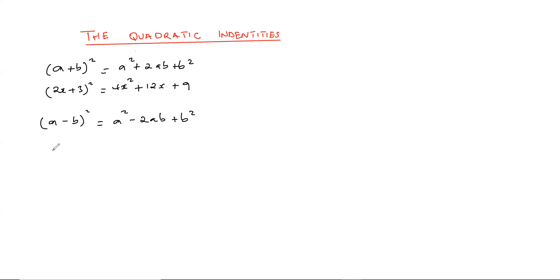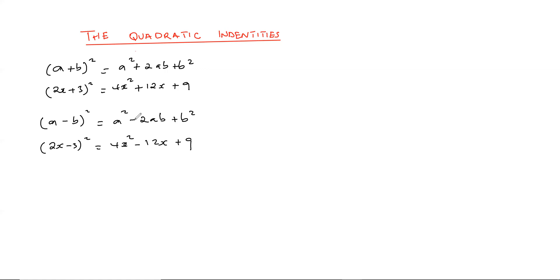An example: if it was (2x minus 3) squared, this gives you 4x squared minus 12x plus 9. The only difference is the sign, because 2x times negative 3 times 2 gives you negative 12. This is the second identity. When you have a factorized expression, it can be written in expanded form, and if you have it expanded, you can change it to factorized form — same as the first.